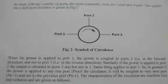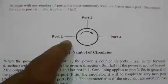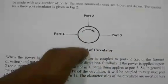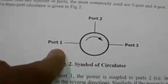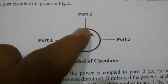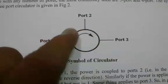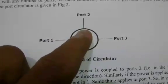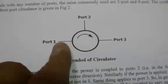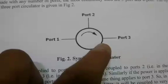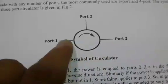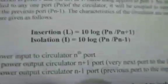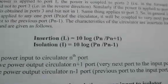The circulator is a three-port device with ports one, two, and three. It couples energy in the clockwise direction. If you give input to port one, it couples to port two but not port three. If input is given to port two, it couples to port three but not port one. If input is given to port three, it couples to port one but not port two. The characteristics of the circulator are also insertion loss and isolation.